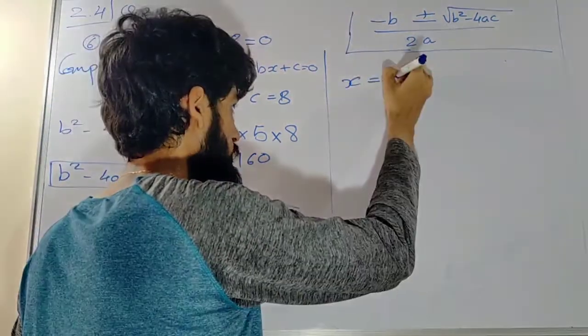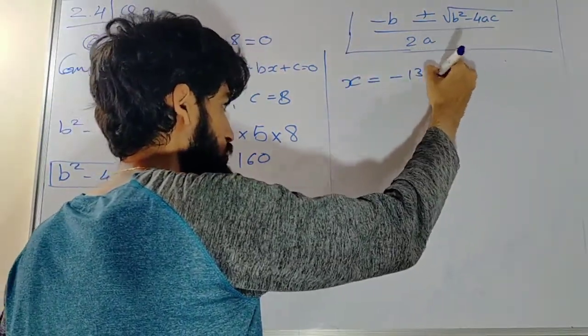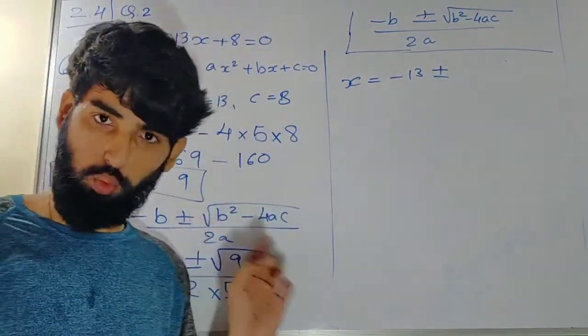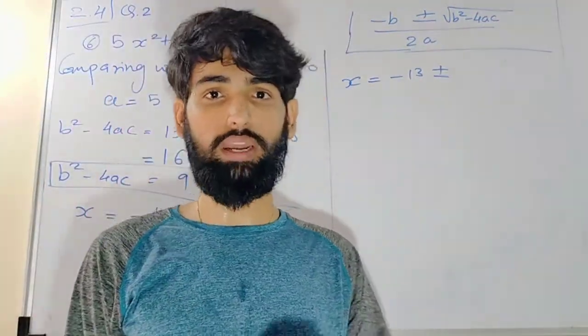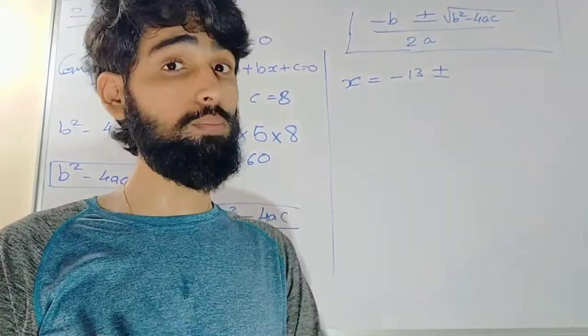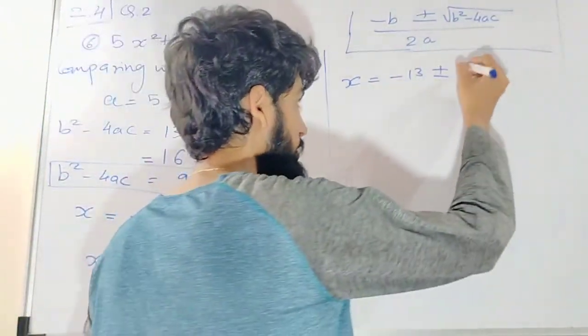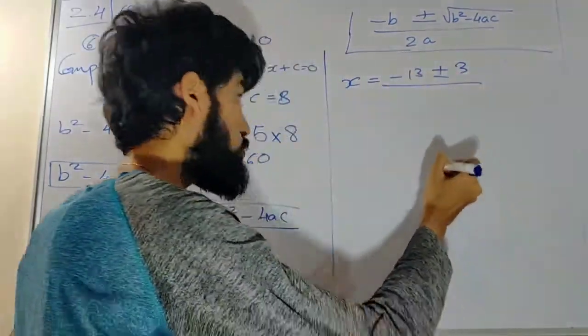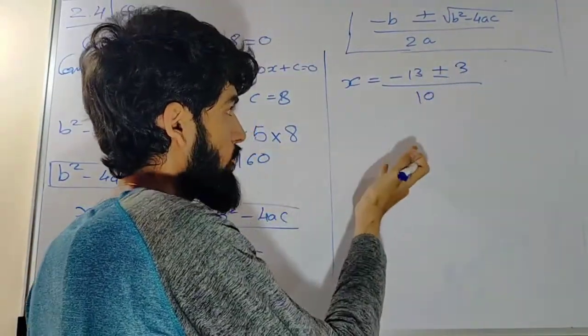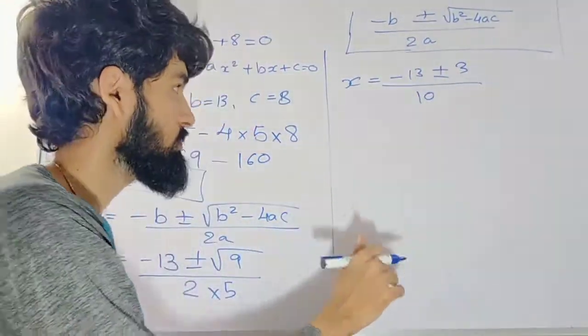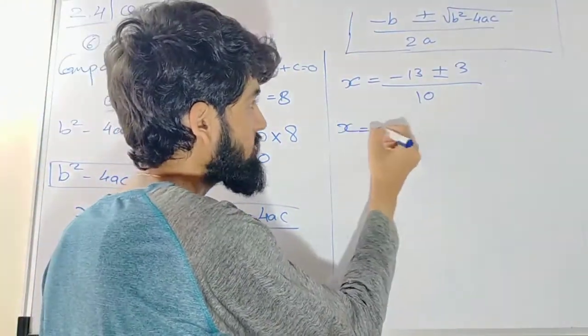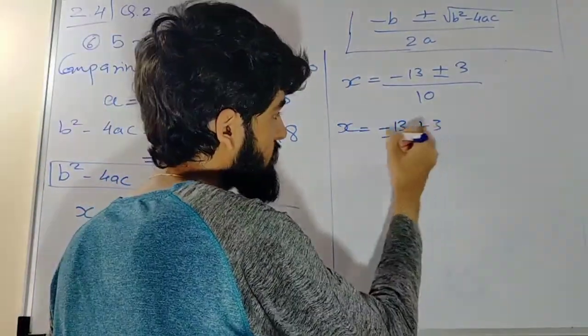x is equal to minus 13 plus or minus square root of 9. Square root of 9 is 3, not plus or minus 3, it is just 3. So answer will be divided by 2 into 5, that's 10. Can we simplify? Yes, we can simplify. So we can write x is equal to minus 13 plus 3 by 10.